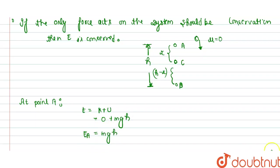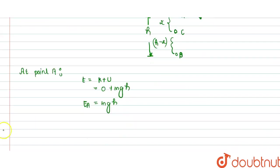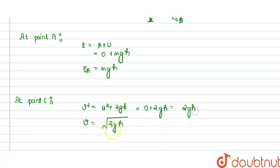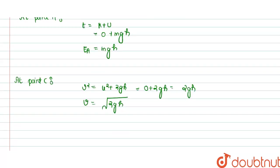Similarly, we find the energy at point C. We know that v² equals u² plus 2gx. Since u is zero, v equals the square root of 2gx.